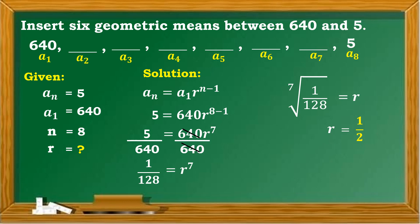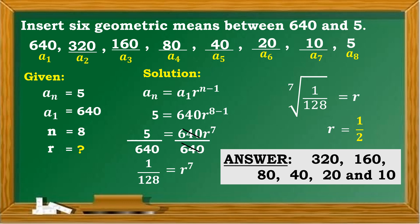Next, multiply 640 by 1/2, which is the same as dividing by 2, since the common ratio is the fraction 1/2. 640 divided by 2 is 320; 320 divided by 2 is 160; 160 divided by 2 is 80; 80 divided by 2 is 40; 40 divided by 2 is 20; 20 divided by 2 is 10. So the 6 geometric means between 640 and 5 are 320, 160, 80, 40, 20, and 10.